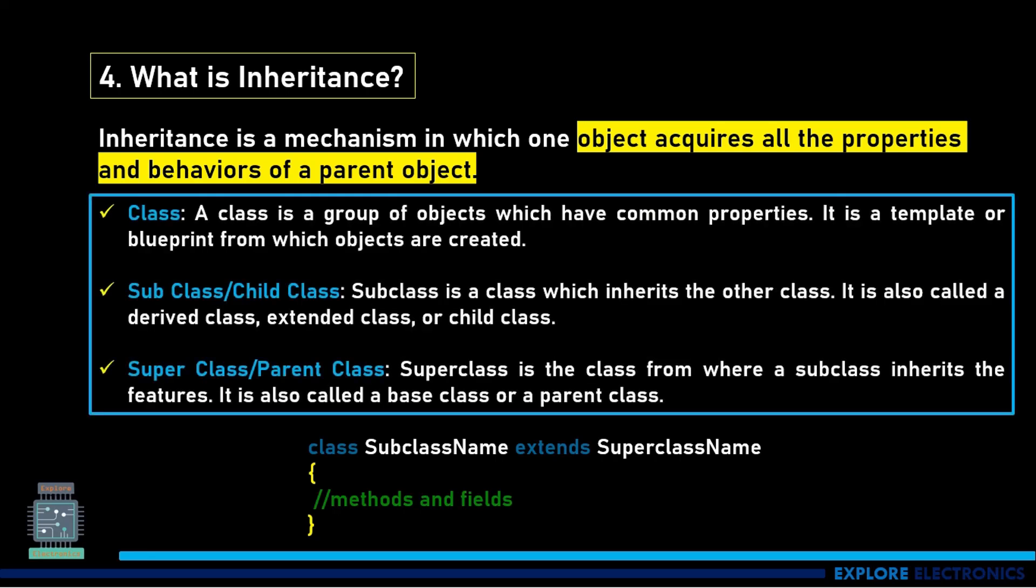Here we need to understand what is class, subclass or child class, and superclass or parent class. A class is a group of objects which have common properties. It is a template or blueprint from which objects are created. What is subclass? We call it as child class. Subclass is a class which inherits the property of the parent class, or we say it is a derived class which is extended from the parent class.